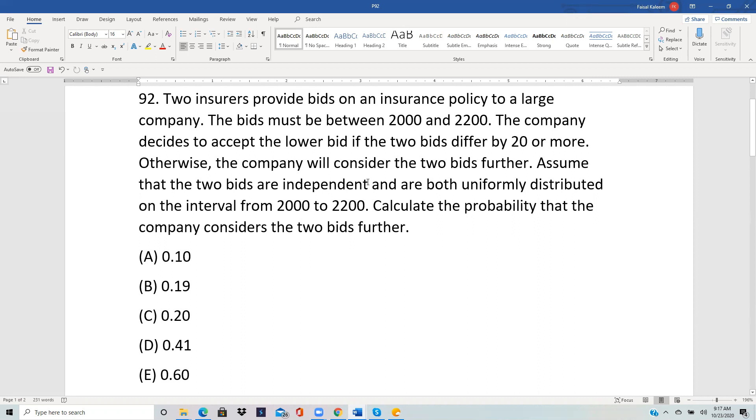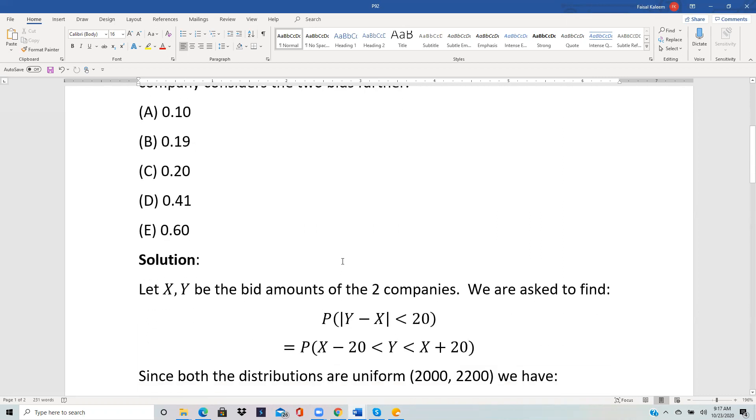The company considers the two bids further if they differ by less than 20, because for 20 or more they choose the lower bid. If we call X and Y the two bid amounts, then we want the probability of the absolute value of Y minus X to be less than 20.